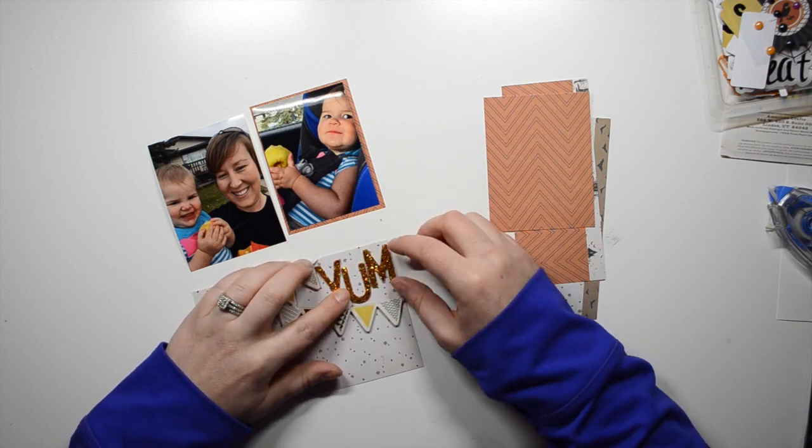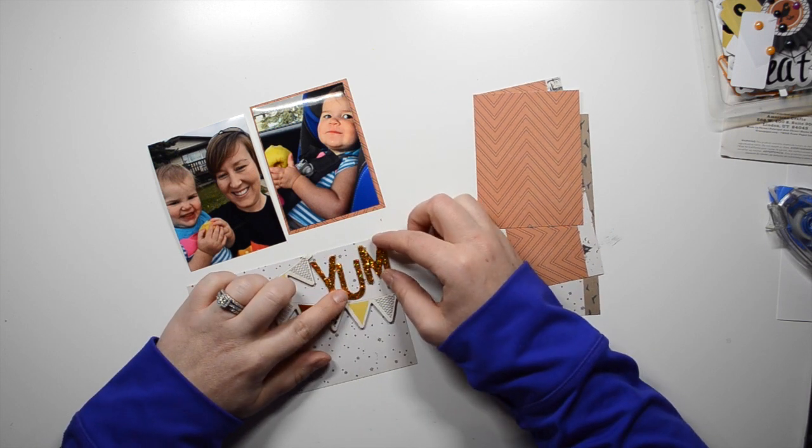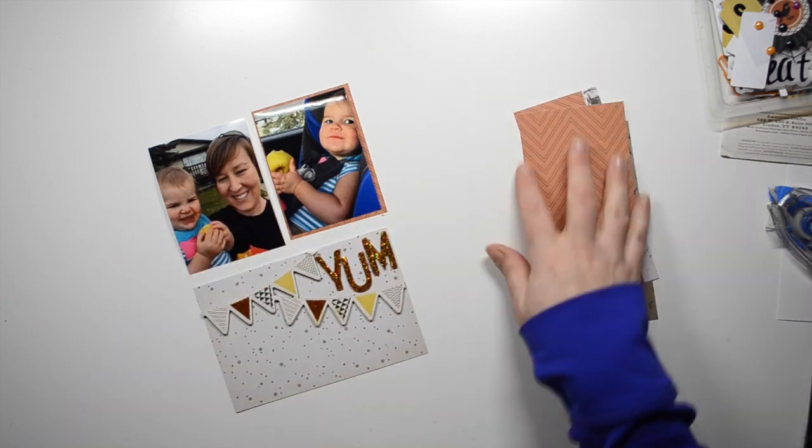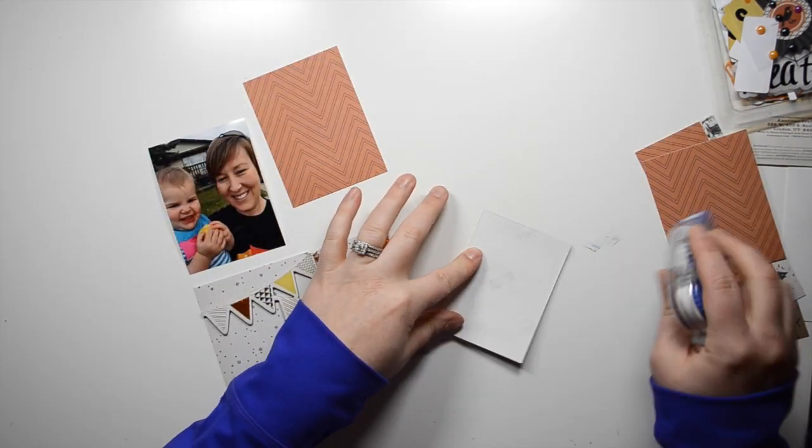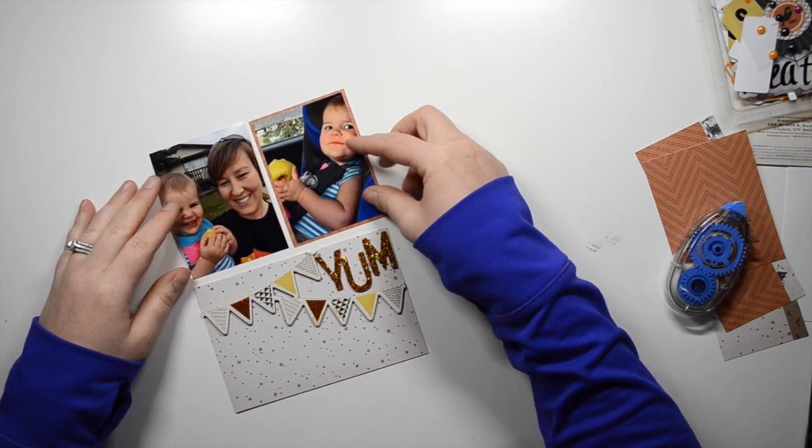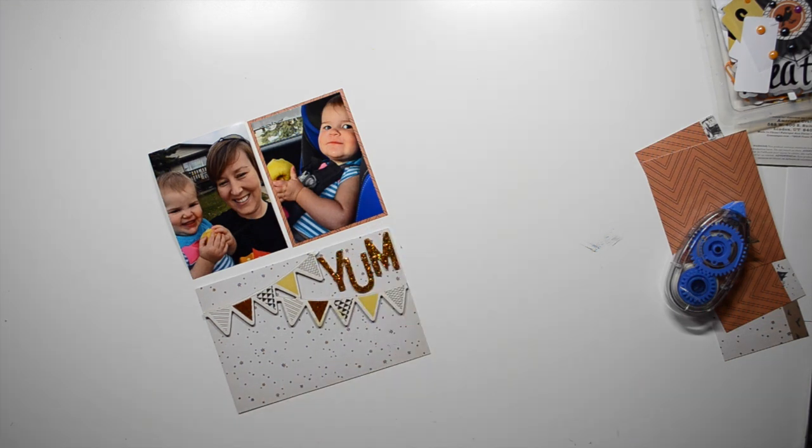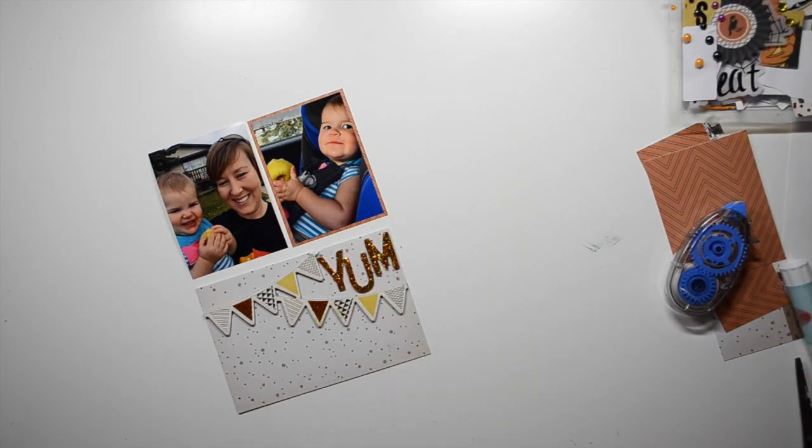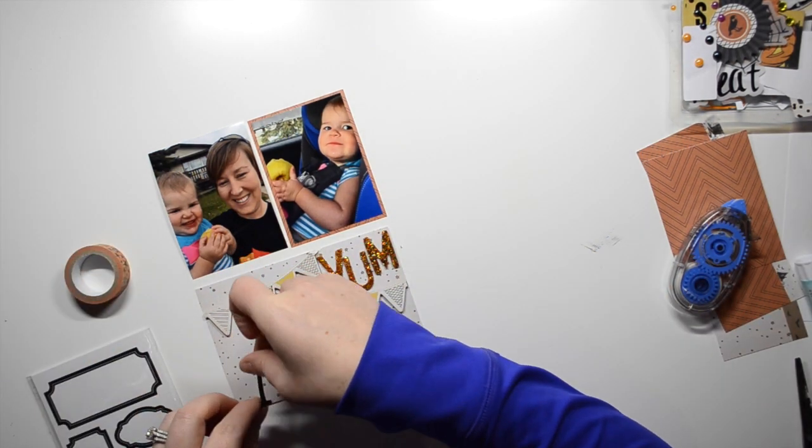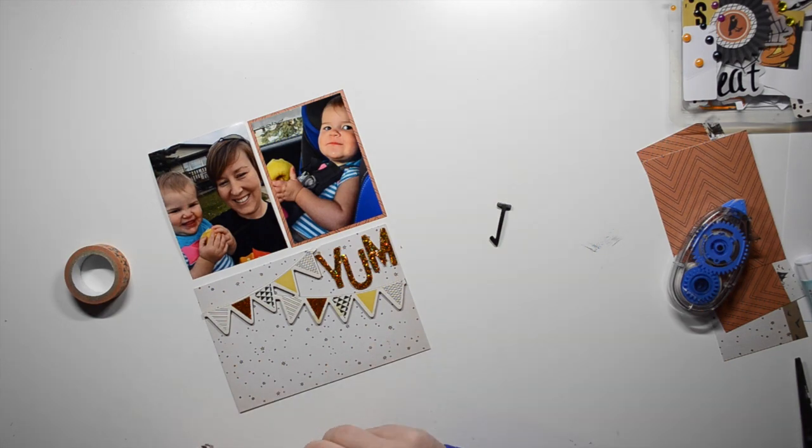And then these stickers I just got from Michael's. But I thought that they matched really well with the collection. They're orange and glittery. And so I just put yum. Because I wanted to put the word apples. But there wasn't enough room. And I didn't really want to take up a bunch more of the card. Because the bunting kind of already takes up a lot of space. So I put yum.